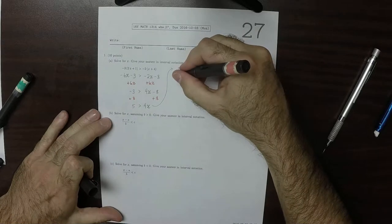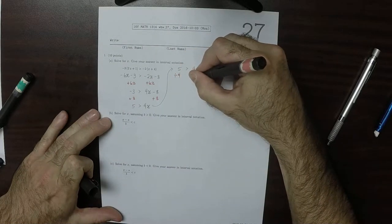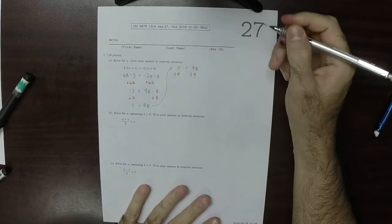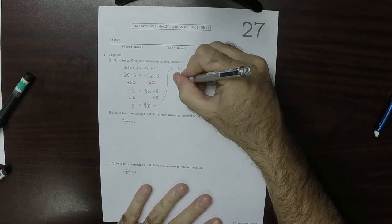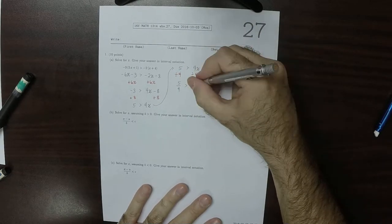So now I'll divide both sides by 4. Since 4 is positive, we don't need to switch the direction of the inequality. So that would be 5 over 4 greater than x.